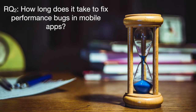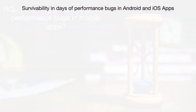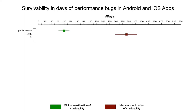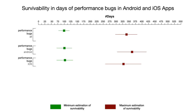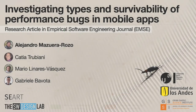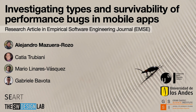Concerning our second research question, we present minimum and maximum estimations of survivability in intervals when considering all the analyzed performance bugs that we retrieved, when grouping them by mobile platform — namely Android and iOS — and when considering bugs unrelated to performance issues. If you are interested in our research, I invite you all to watch the extended version of this video and to have a look at our research article. Thanks for watching.